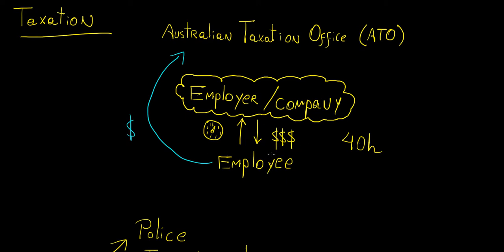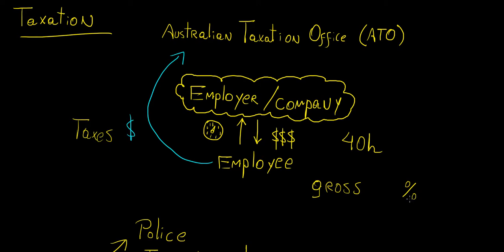You might think you'd get to keep all of that income, but that's not usually how it works — and this is true for any country. There's this thing called taxes that you actually need to pay. A tax is a basic percentage of your total income, which we call the gross income. The gross income is how much you're actually being paid by the company, but a percentage of that goes back to the Australian Taxation Office, which is the government.